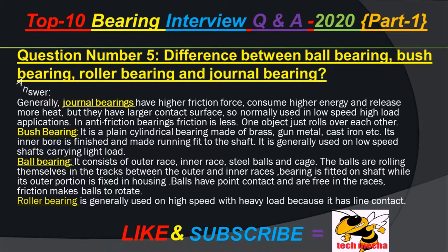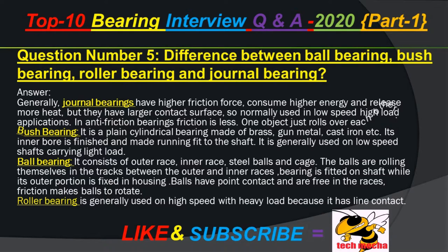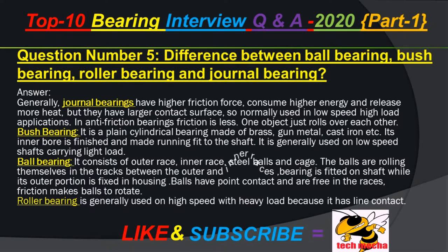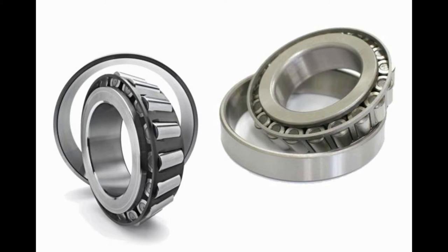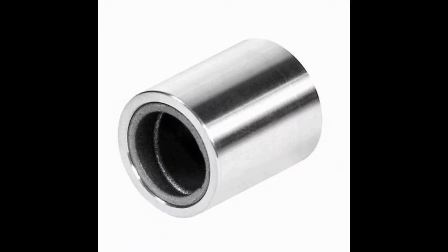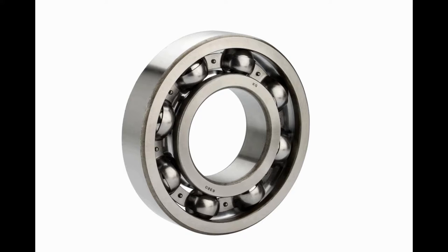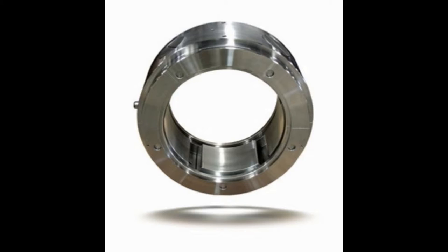Question number 5: Difference between ball bearing, bush bearing, roller bearing, and journal bearing. Answer: Journal bearings have higher friction force, consume higher energy, and release more heat, but have a larger contact surface, so they are normally used in low speed, high load applications. In anti-friction bearings, friction is less and one object just rolls over the other. Bush bearing is a plain cylindrical bearing made of brass, gun metal, or cast iron; its inner bore is finished and made running fit to the shaft, generally used on low speed shafts carrying light loads. Ball bearing consists of outer race, inner race, steel balls, and cage. The balls roll in tracks between the outer and inner races. The bearing is fitted on the shaft while its outer portion is fixed in housing. Balls have point contact and are free in the races.